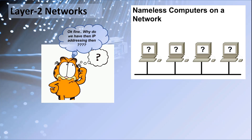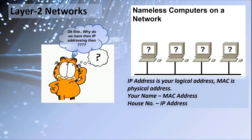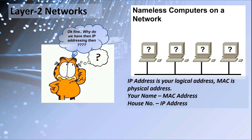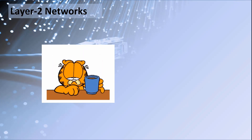Another question: if MAC addresses are already there, what is the need for IP addressing? MAC address is more like your name — your physical identity — but IP addresses are more like your house address and street number. If someone needs to send a post to you, they can't just use your name as there could be many people with the same name, but with a house number and street address it will be specifically delivered to you.